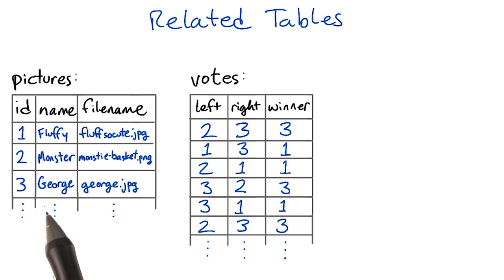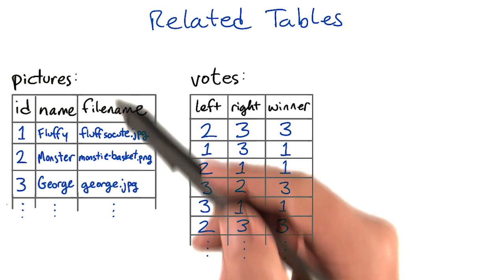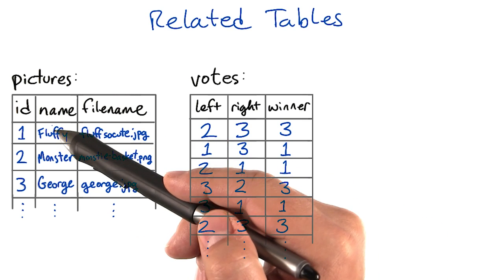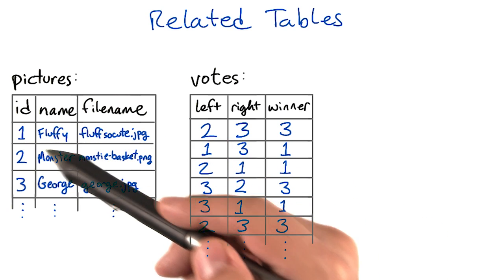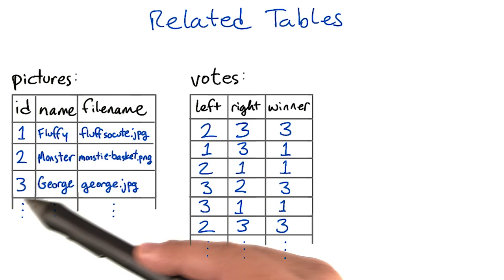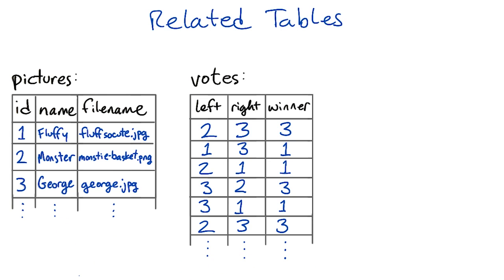Fluffy, Monster, and George are all animals whose picture someone has uploaded. Because we might have two animals with the same name, we give each one a numeric ID here. The pictures table says that Fluffy has ID 1, Monster has ID 2, George has ID 3, and so on.